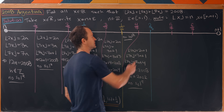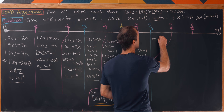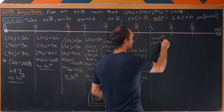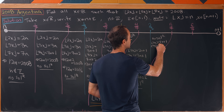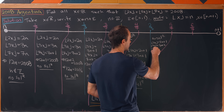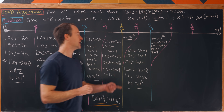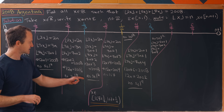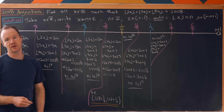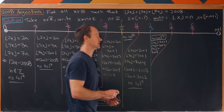Between 2/3 and 5/7: floor(2x) = 2n + 1, floor(3x) = 3n + 2, floor(7x) = 7n + 4. The leftover bits are odd again — just like the earlier odd-equals-even scenarios — so 12n plus an odd number cannot equal 2008. There is no solution in this region either.